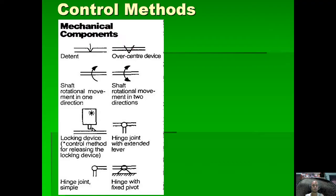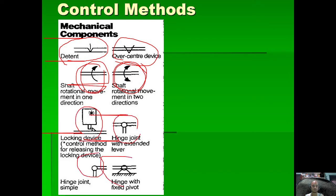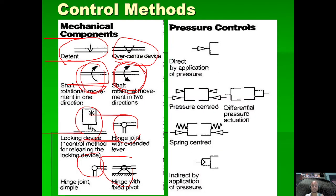For control methods: a detent holds its position once activated. We have an over-center device, rotation in one direction only, and shaft rotation in two directions making it reversible. There is a locking device and a hinge which swings like a door hinge.